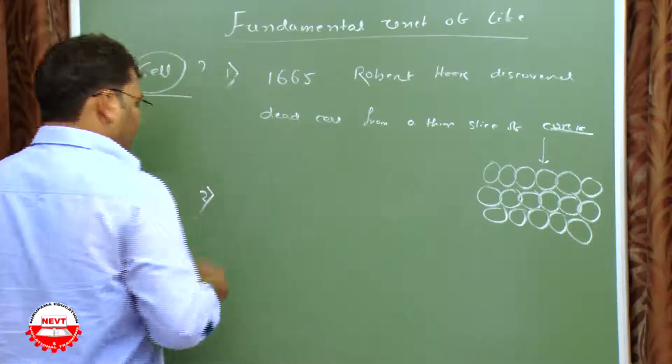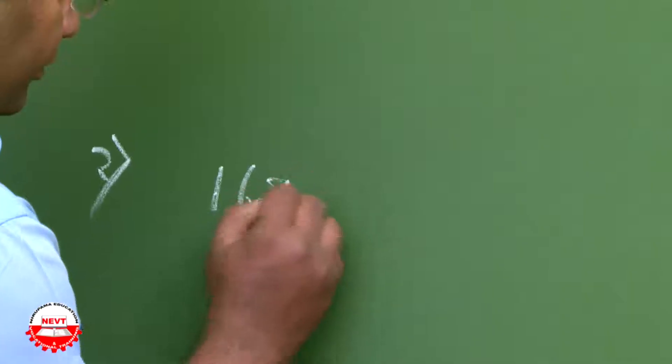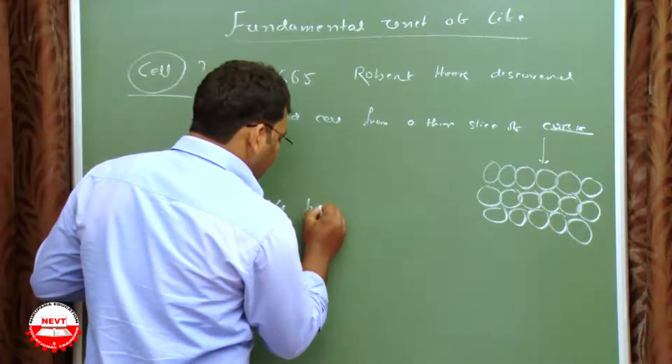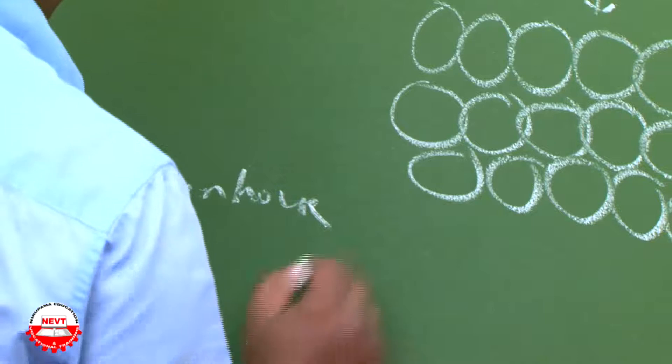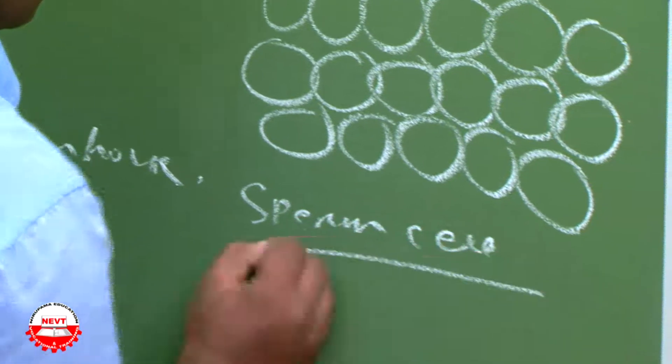Later, living cell was discovered in 1674 by A.V. Leeuwenhoek, that is sperm cell.